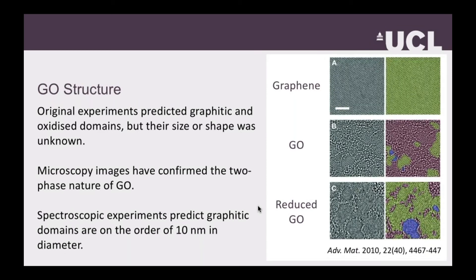If we look at some more up-to-date experimental data, which has become clear in the past 10 years, we can see that there are two phases in graphene oxide: graphitic domains where there is no oxidation, and oxidized domains. This is also chemically intuitive because once you've oxidized an aromatic carbon structure at one site, it's more likely to be oxidized nearby.